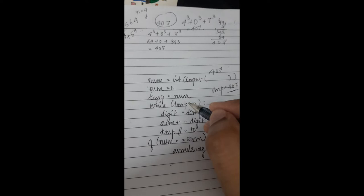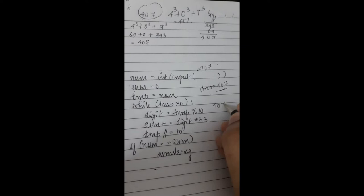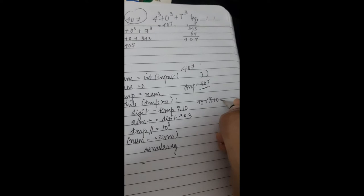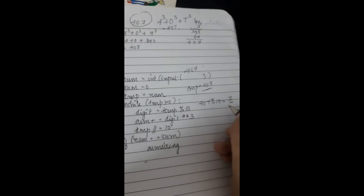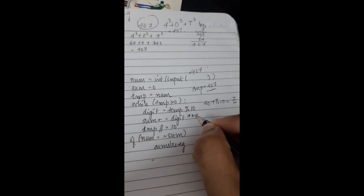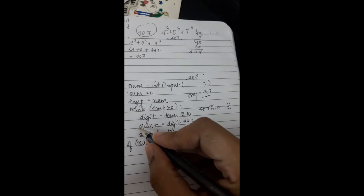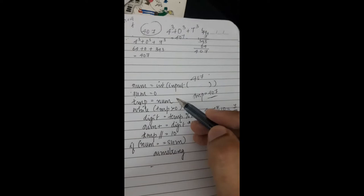Your while loop is going to work as long as temp is greater than zero. Now look at the first step: digit is equal to temp modulo 10. Your temp value is 407; when you do modulo 10 it returns the remainder, which is seven. So digit is now containing the value seven. Next step: sum is equal to sum plus digit raised to three. Seven raised to three is added into sum, so sum equals zero plus seven raised to three, which is 343.